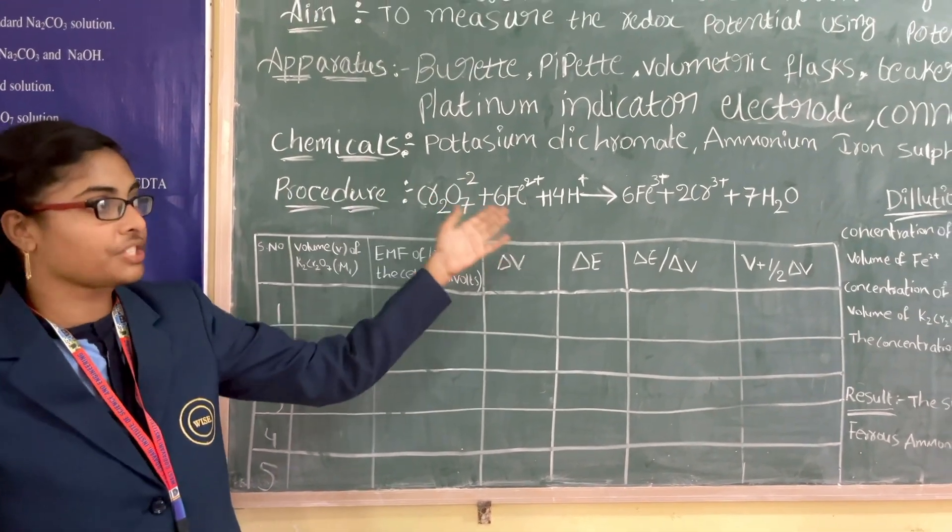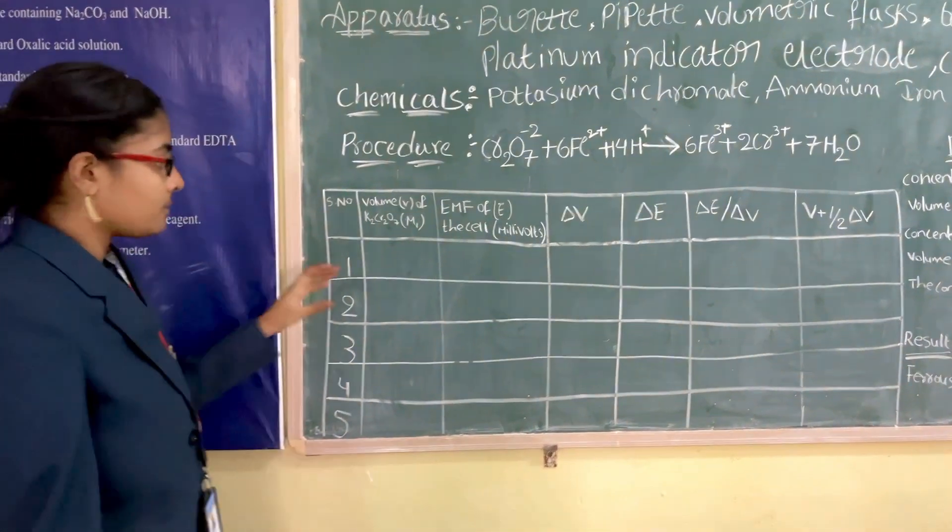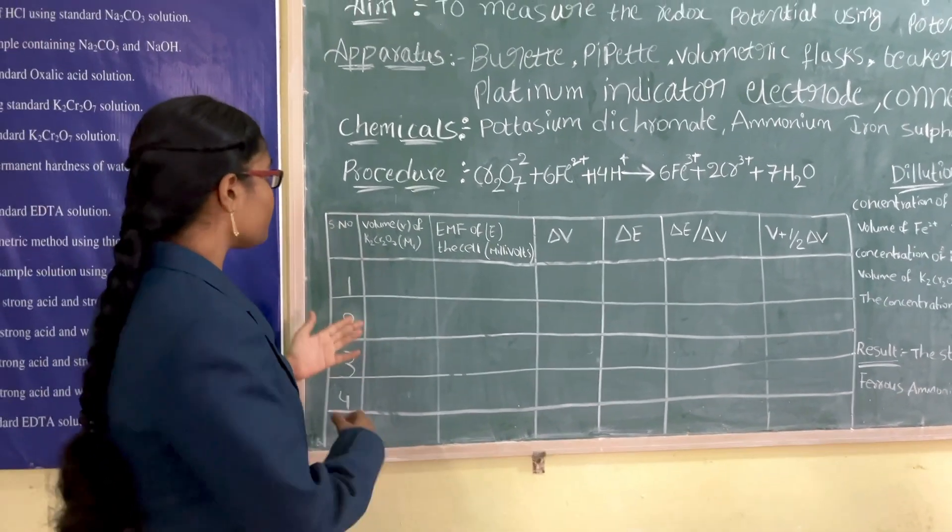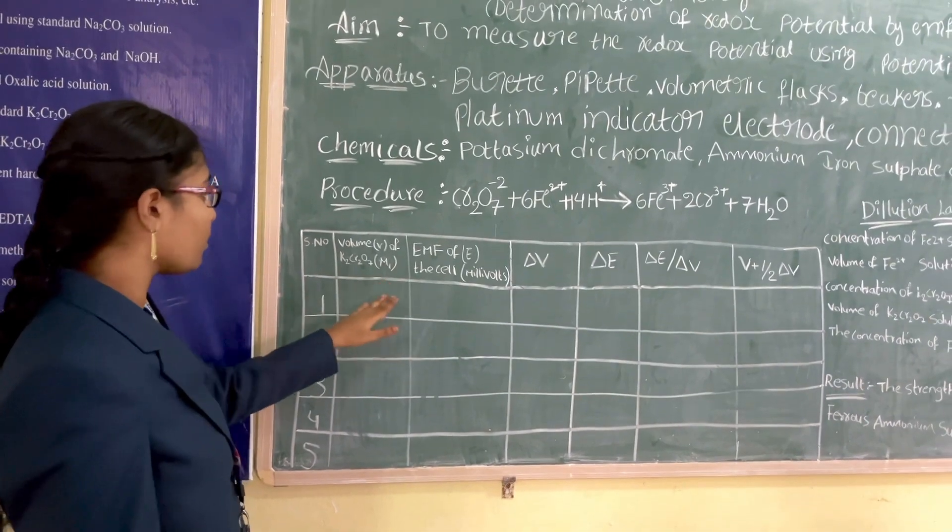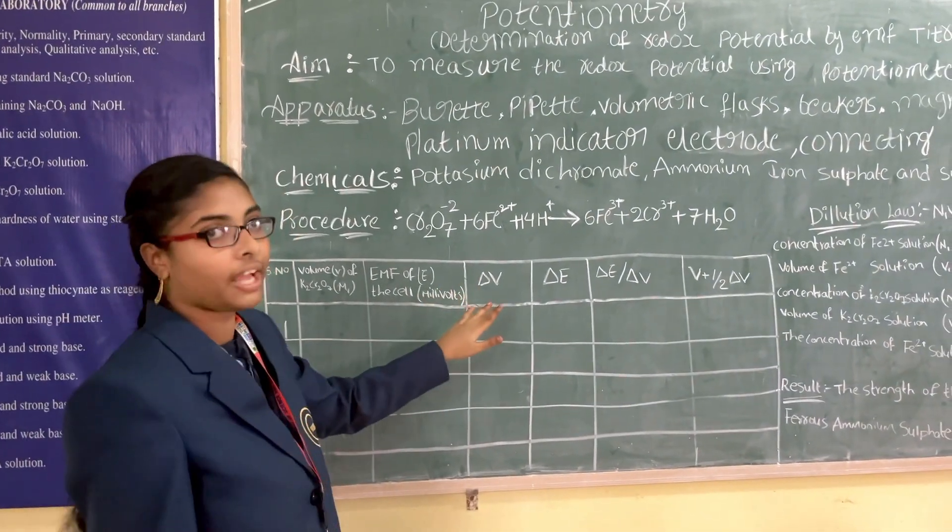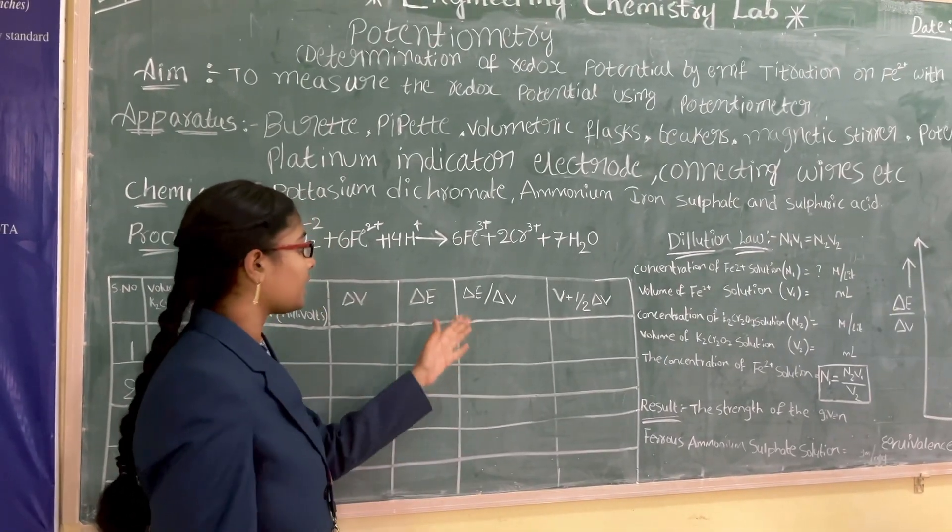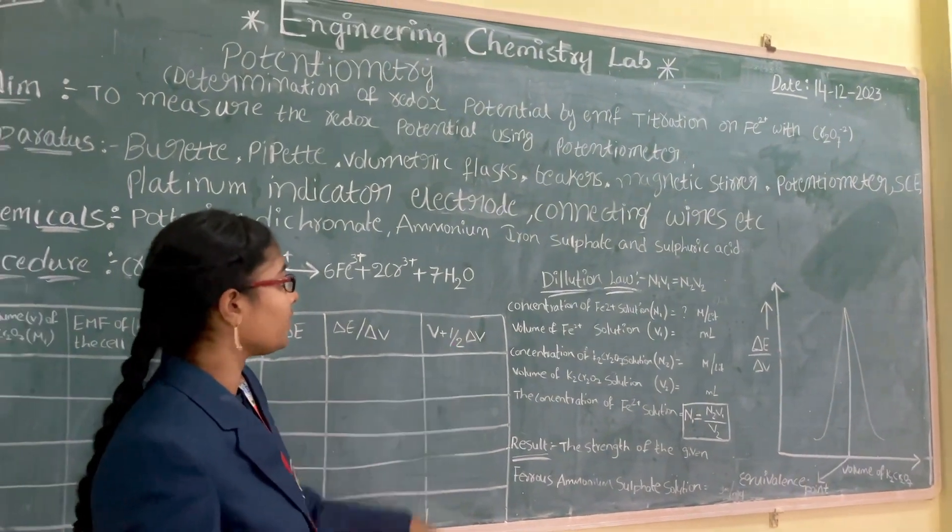Repeat this observation 2 or more times and record the observations in the table. We have to take the values in the table: volume of K2Cr2O7, EMF of the cell, delta V value, delta E value, delta E by delta V, and V plus 1/2 delta V.